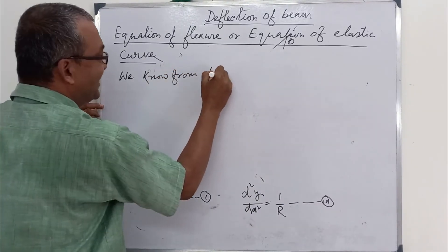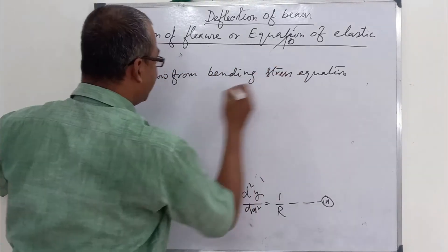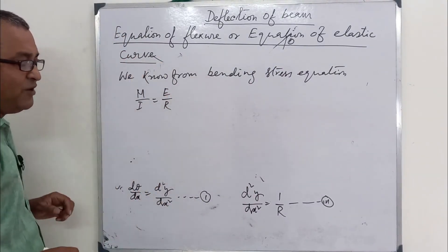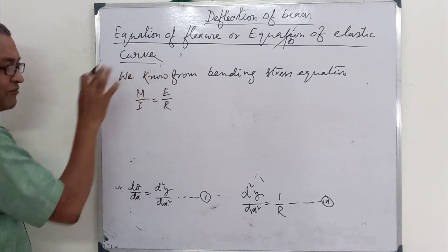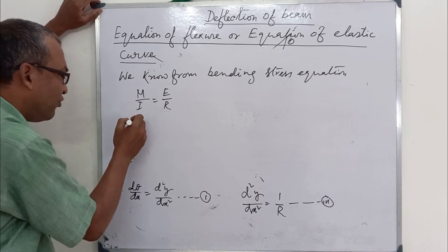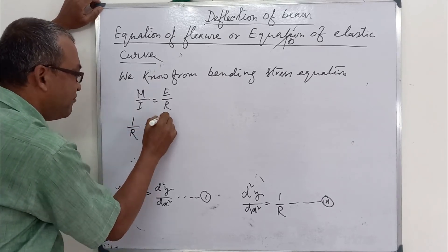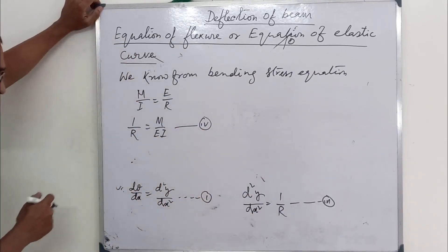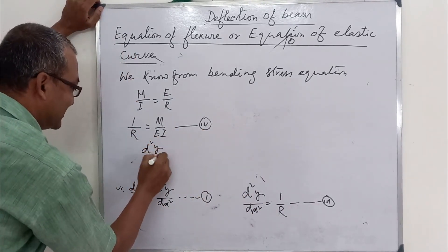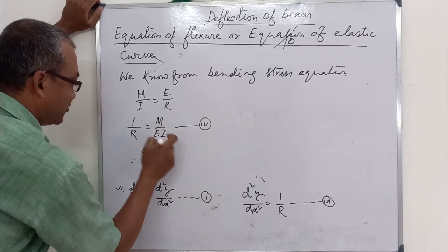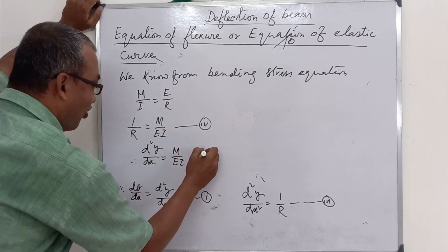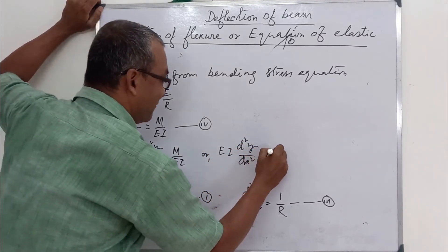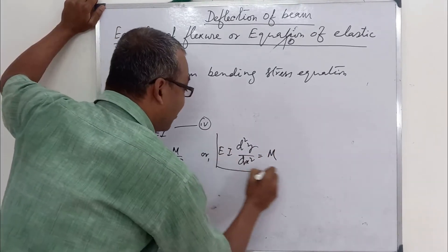From the bending stress equation, M/I equals E/R equals sigma_b/y. Therefore, 1/R equals M/EI. This is equation four. From equations three and four: d²y/dx² equals M/EI, and therefore EI·d²y/dx² equals M. This is the equation of the elastic curve.